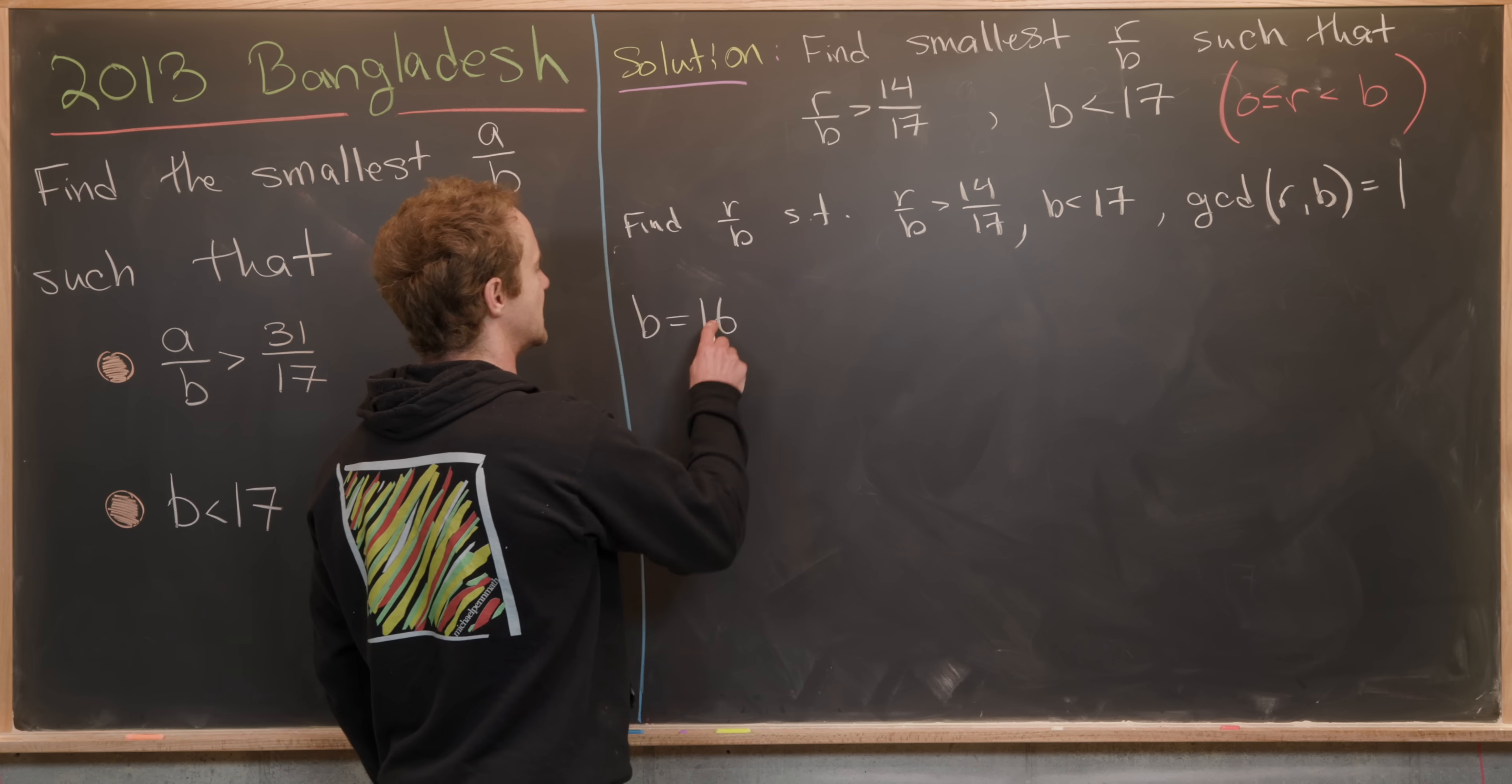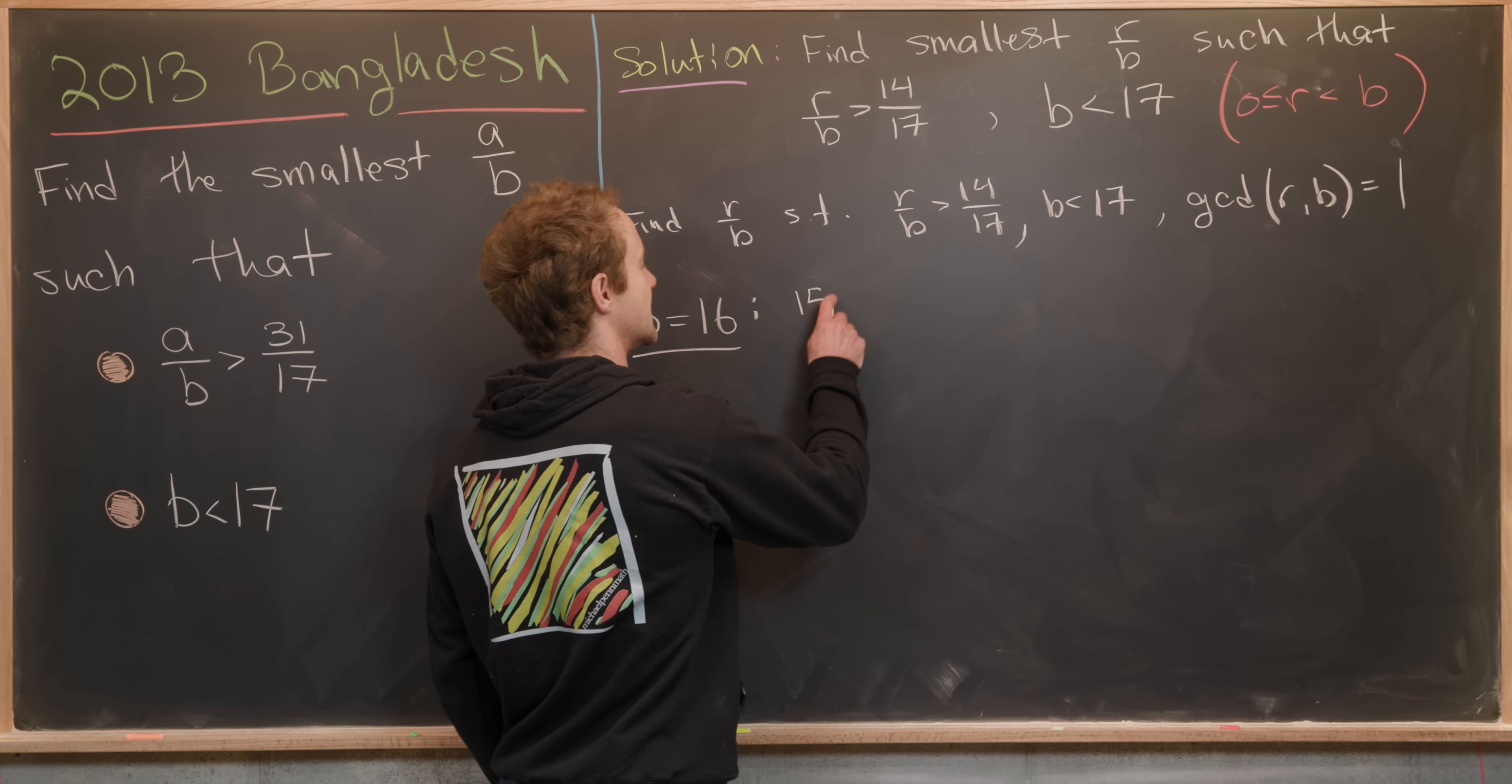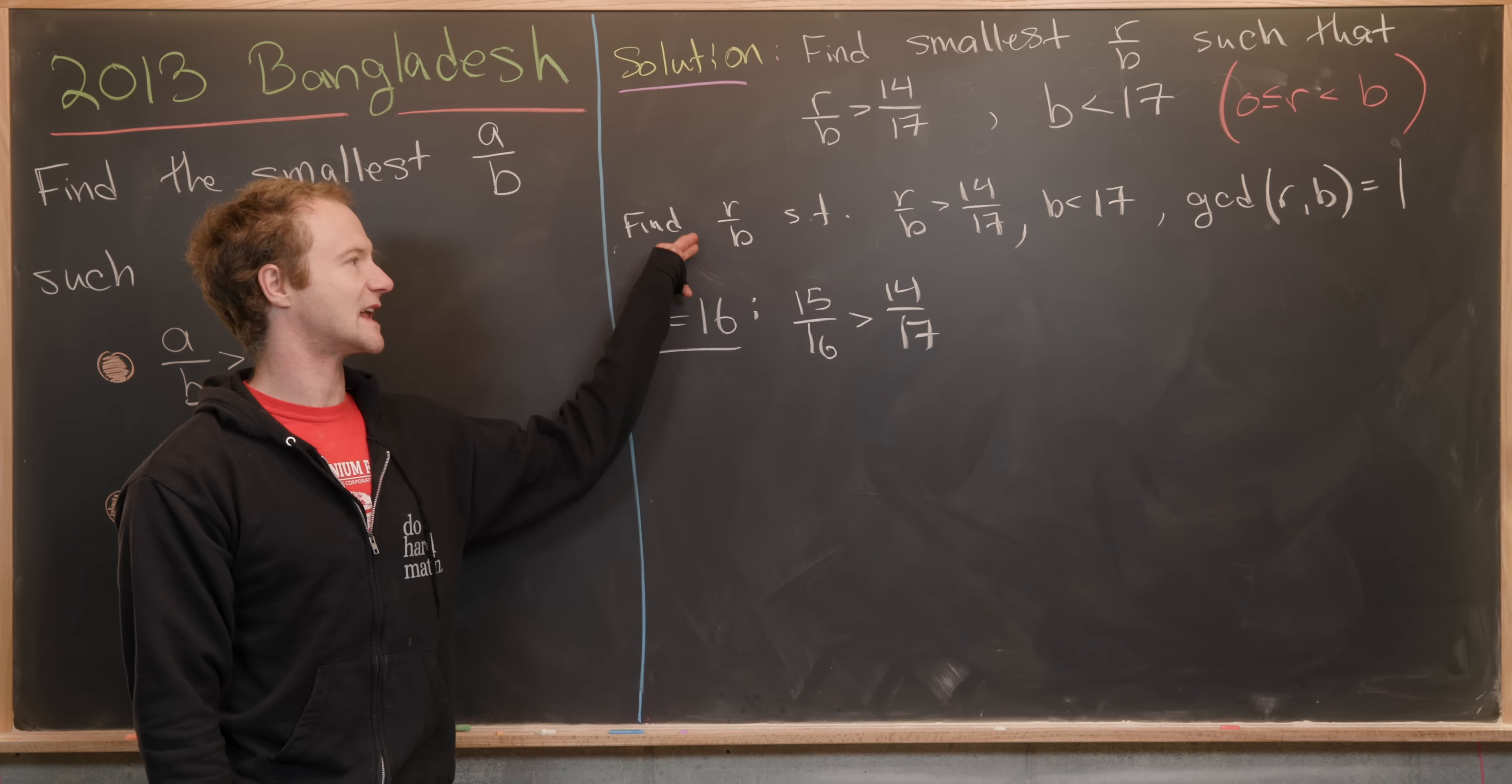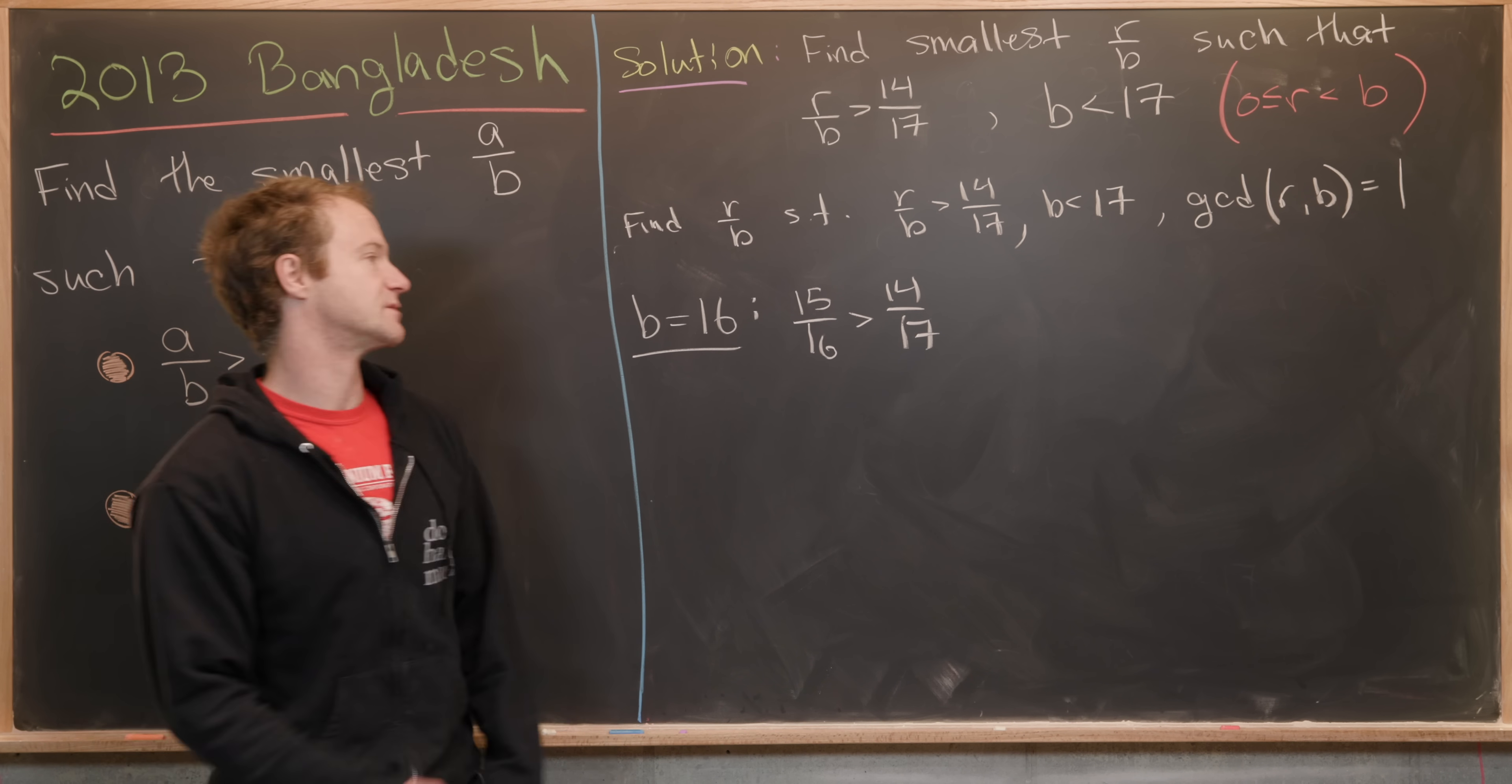Our first case is B equals 16. You can check that 15 over 16 is bigger than 14 over 17. But then any fraction that satisfies these rules, including the GCD requirement, will be too small.